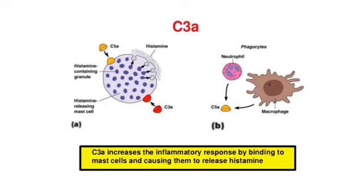For example, complement split products like C3a and C5a can act as anaphylatoxins causing mast cell degranulation, leading to vasodilation and extravasation of neutrophils and lymphocytes into the tissue from the blood. Antibody production and complement activation can also facilitate receptor-mediated opsonization and phagocytosis of extracellular bacteria by macrophages and neutrophils in the localized inflammatory response.